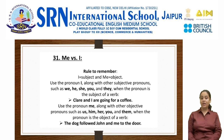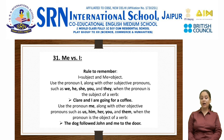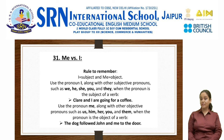The next error is me versus I. The rule to remember is: I is a subject and me is an object. Use the pronoun I along with other subjective pronouns such as we, he, she, you, and they when the pronoun is the subject of the verb. For example: Claire and I are going for a coffee. Use the pronoun me along with other objective pronouns such as us, him, her, you, and them when the pronoun is the object of a verb. For example: the dog followed John and me to the door.